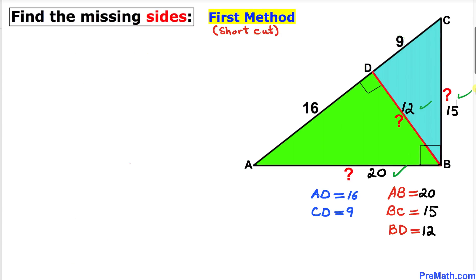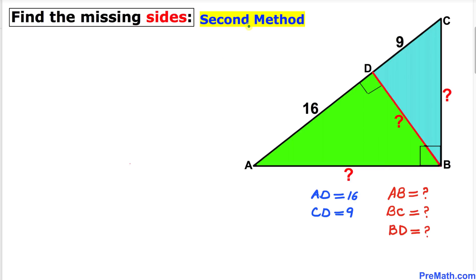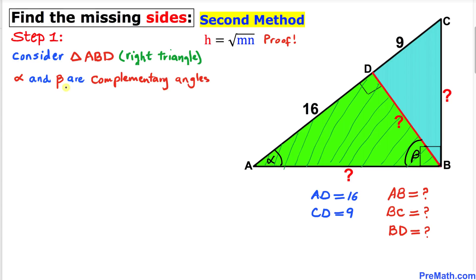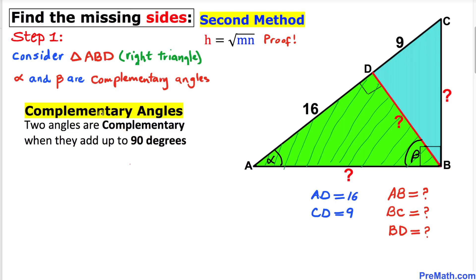Now let me share the second method, which will also explain the formula we used in the first method. Let's focus on right triangle ABD — we know this is a right angle. Let me call this angle alpha and this angle beta; then alpha and beta are complementary angles, meaning they add up to 90 degrees.